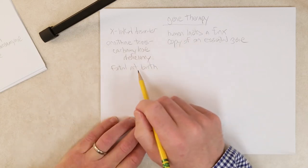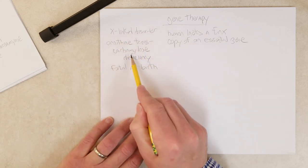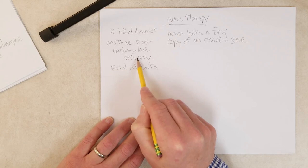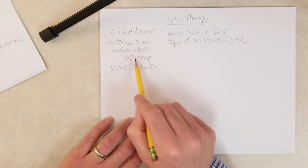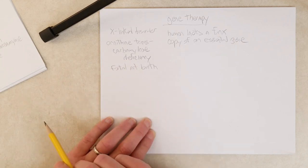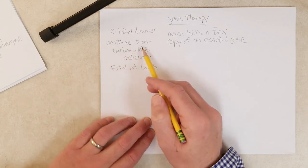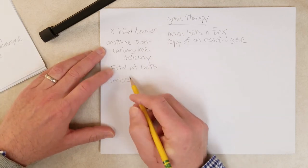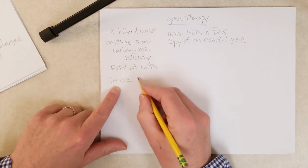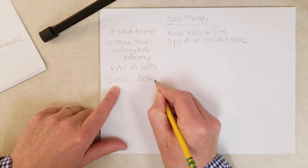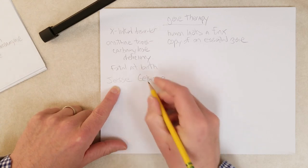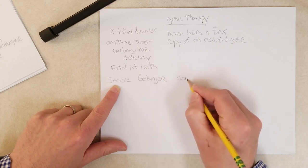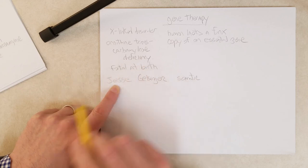However, there are some cases of this disorder where the ornithine transcarbamylase gene is partially functional and those individuals can survive. There is a person who suffered from this deficiency named Jesse Gelsinger. Jesse had a form of the disorder that was not as severe as the fatal form.